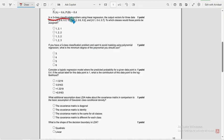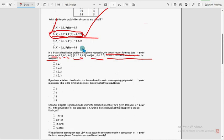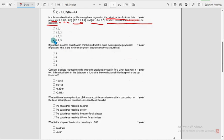Third question. In a three class classification problem using linear regression, the output vectors for three data points are 0.8, 0.3, minus 0.1, next vector 0.2, 0.6, 0.2, and next minus 0.1, 0.4, 0.7. To which classes would this point be assigned? For third question, fourth option 1, 2, 3. This is the correct solution.